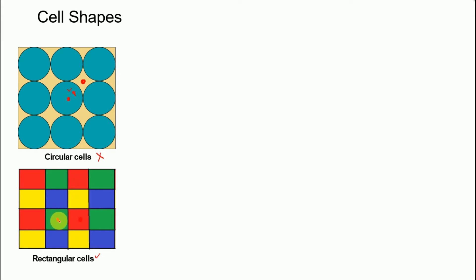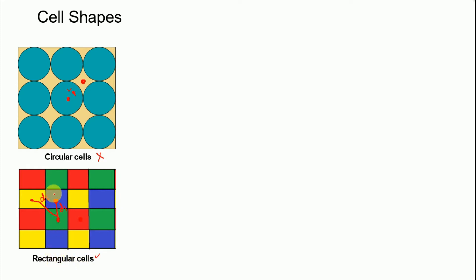Consider a rectangular cell. The distance between the base transceiver station and a neighboring cell is D1. On the diagonal, we have another base transceiver station, and that distance is D2. We can say that D2 is greater than D1, so the distances are not maintained. Therefore, rectangular structures are also not viable.